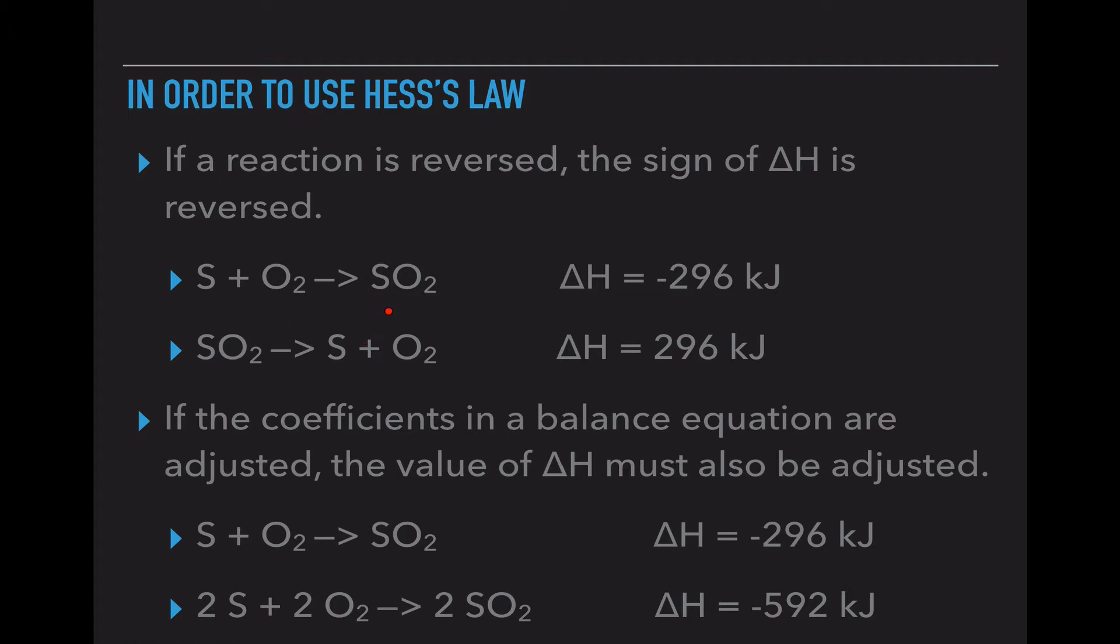These first two bullet points, I had the same chemical reaction. I just took the reactants and the product and flip-flopped their locations. So since I essentially reversed the direction of that arrow, and this was a negative 296 kilojoules, I had to then take away that negative sign. If I reverse the reaction, the sign or numerical positive or negative of that delta H must also be reversed.